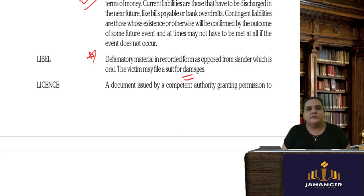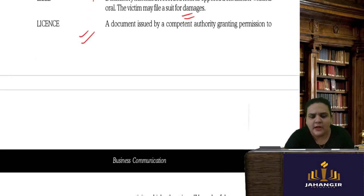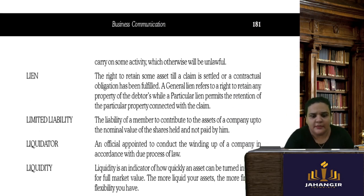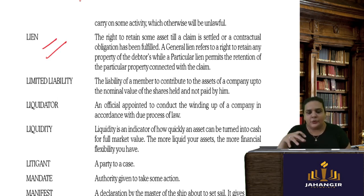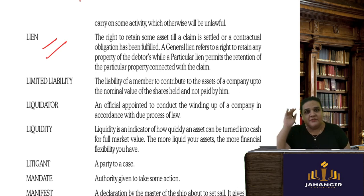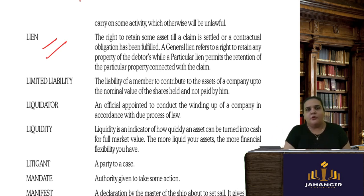A license is a document issued by the government or competent authority for a particular activity — such as a driving license or license to carry on some business. Lien means a right to retain assets until contractual obligations are completed. For example, if you gave your clothing to a tailor but have not made a previous payment, the tailor will keep your goods until you clear your previous obligations.